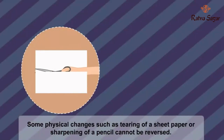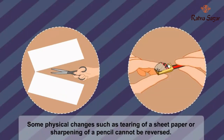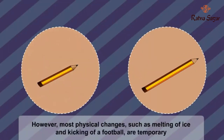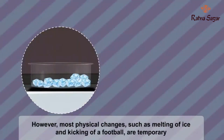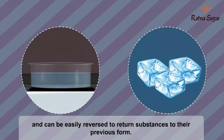Some physical changes, such as tearing of a sheet of paper or sharpening of a pencil, cannot be reversed. Once changed, you cannot bring back the original shape or size. However, most physical changes, such as melting of ice and kicking of a football, are temporary and can be easily reversed to return substances to their previous form.